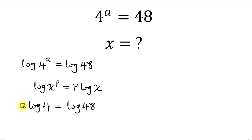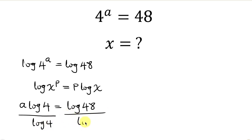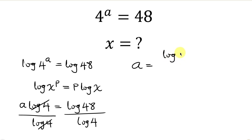Now since we're looking for a, our next step will be to divide both sides by log 4. I'll divide the left by log 4 and the right-hand side by log 4. Notice that log 4 cancels out, leaving a to be equal to log 48 all over log 4.